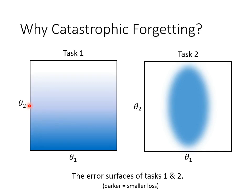The bluer the color, the smaller the loss. The more white the color, the greater the loss. The left and right pictures correspond to Task 1 and Task 2 respectively — these are their error surfaces.